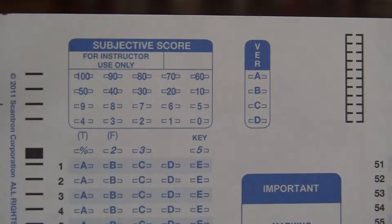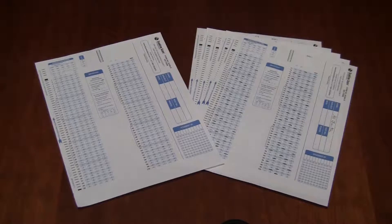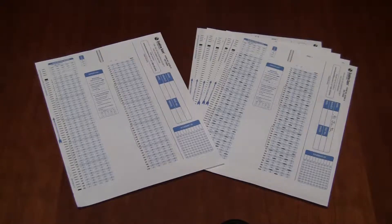Now that you know a little bit about subjective scoring, let's find out how to use it. Step 1: Obtain the form. Begin by using the same test form the students used for the test.